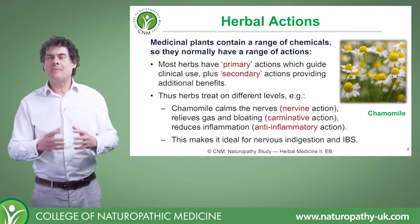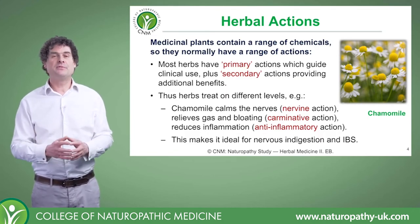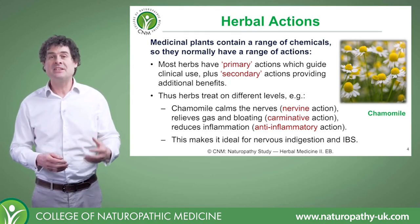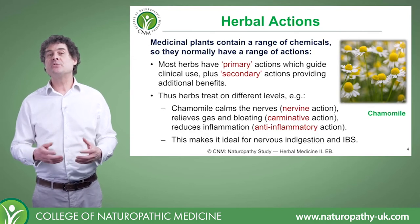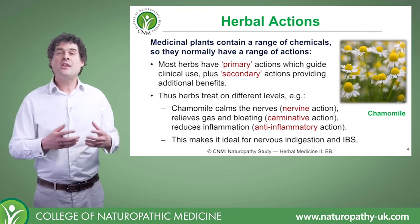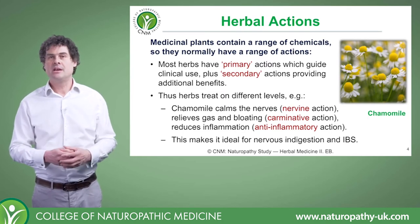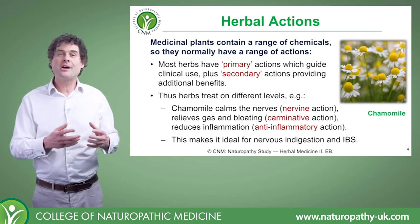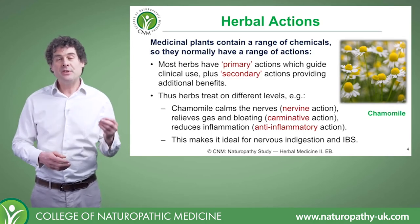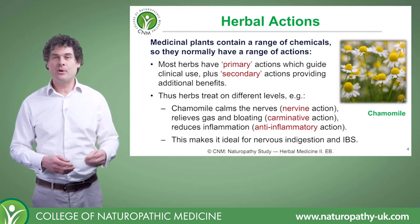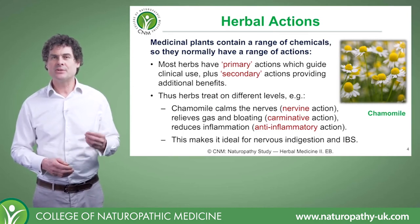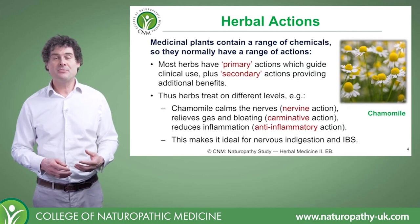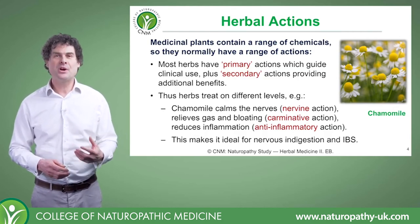A good example is chamomile. It contains anti-inflammatory volatile oil, giving it an anti-inflammatory effect. It also has a central nervous system relaxing effect — that's called a nervine relaxant property. Its volatile oils also relax smooth muscles, making it a carminative. If you make a long infusion of good quality chamomile, there's also a little bitterness, so it has a bitter action as well. So chamomile is nervine, anti-spasmodic, carminative, and bitter.